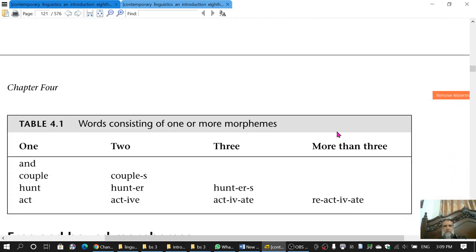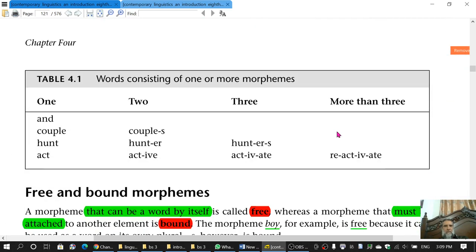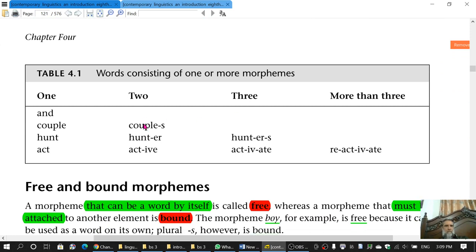And this table gives you information about words which have one morpheme or more than one morpheme. These words, for example, and, couple, hunt, and act, they have a single morpheme. They have one morpheme in them and they are words. Therefore, these are simple.